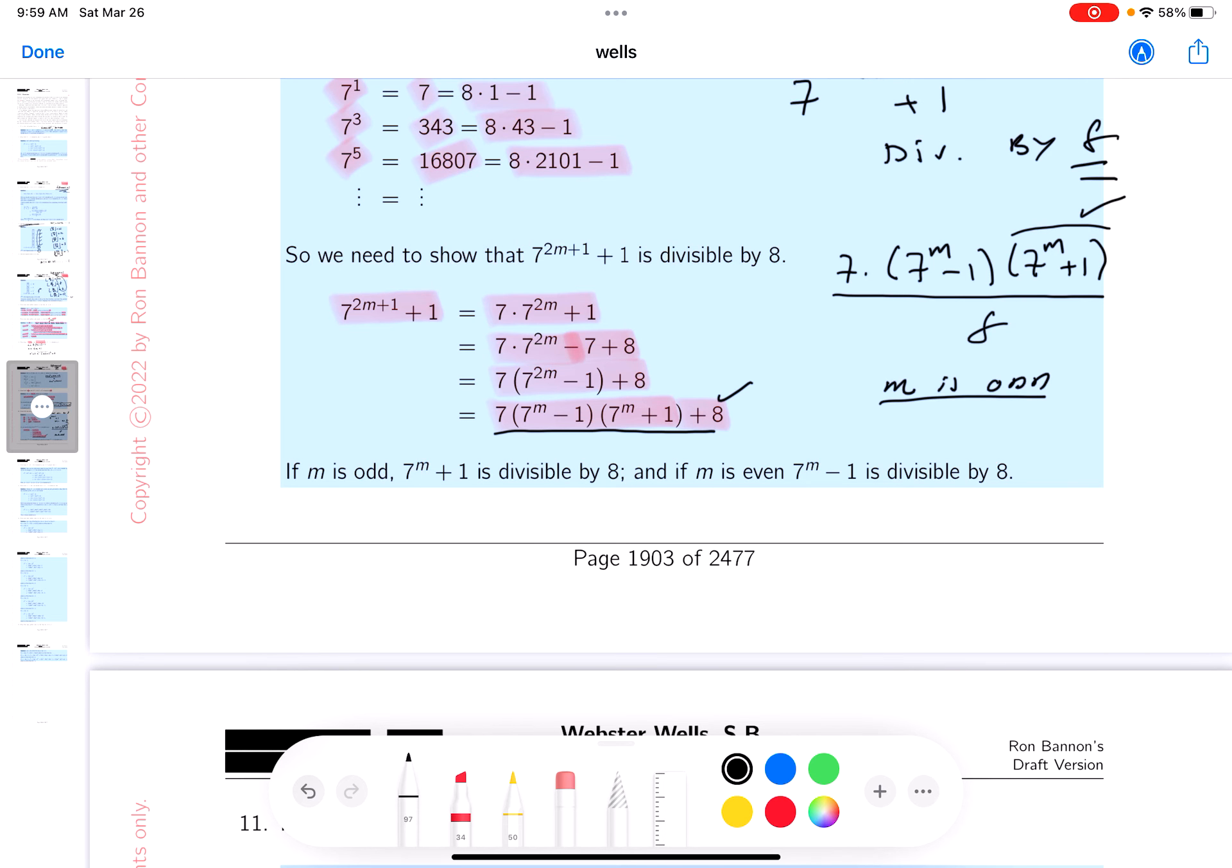If M is even, this factor would be divisible by 8. Like an even number would be, you know, if you chose 2, like 49 minus 1 is 48. 48 divided by 8. Yeah. It's like 6. All right. We're done.